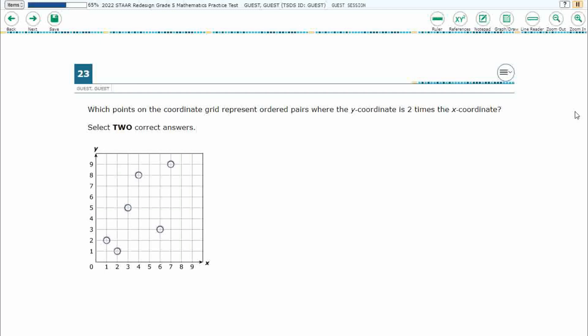So which points on the coordinate grid represent ordered pairs where the y-coordinate is two times the x-coordinate? We need to select two correct answers and if you're looking at this saying where's the rest of the problem, this is it. This is the entire problem because it's a hotspot new item type.